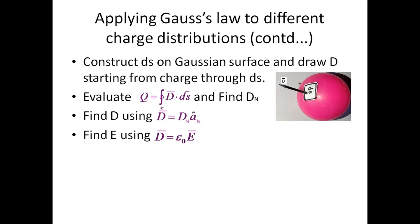Finally, we can find E vector using the relationship D vector equals epsilon naught times E vector. Therefore, E vector equals D vector divided by epsilon naught. Thus, we can find electric field intensity and electric flux density for different types of charge distributions using Gauss law.